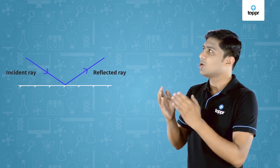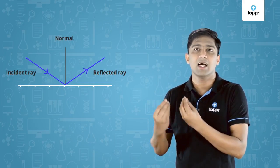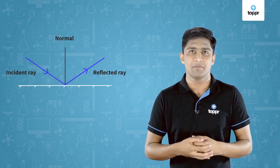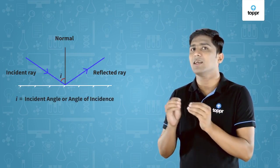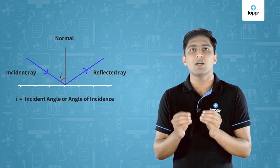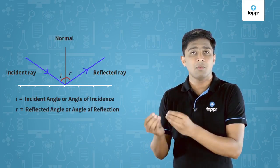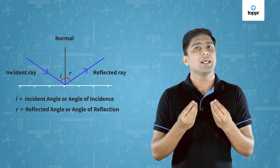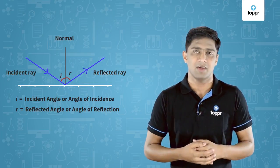Now let's draw a line normal to this plane, by which we can divide the angle between the incident ray and the reflected ray. The angle formed between the normal and the incident ray is called the incident angle or angle of incidence. The angle formed between the normal and the reflected ray is called the reflected angle or angle of reflection.